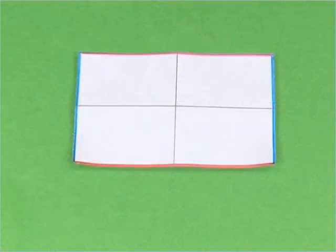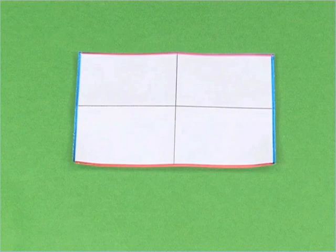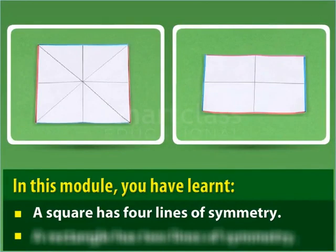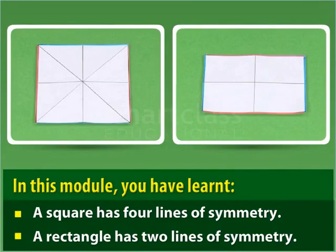No other folds are possible so that the two parts of the rectangle overlap exactly. So there are two lines of symmetry in the rectangle. In this module, you have learned that a square has four lines of symmetry and a rectangle has two lines of symmetry.